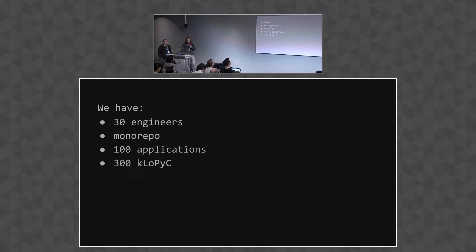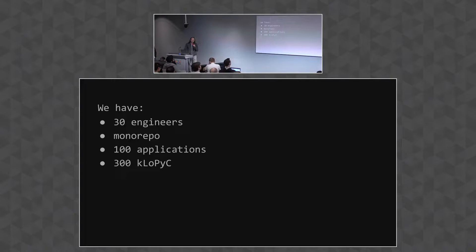We're about 30 engineers working in a monorepo. To date, we've built about 100 applications comprising 300,000 lines of Python code.